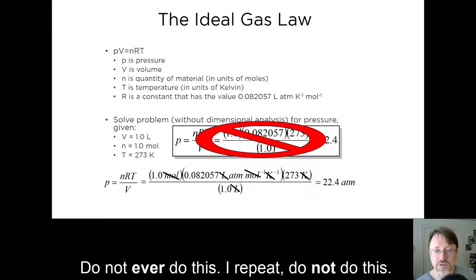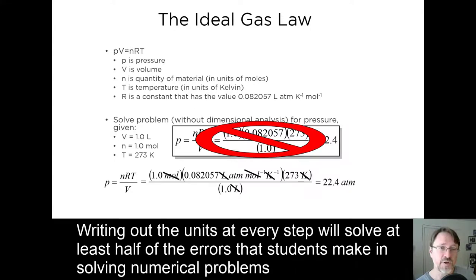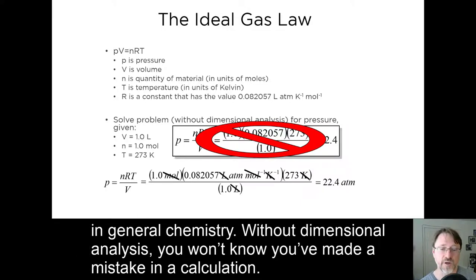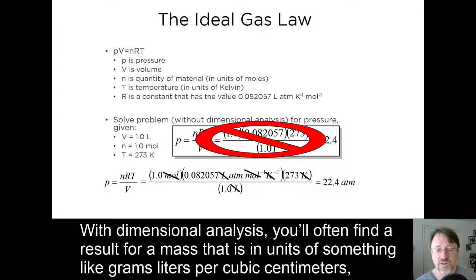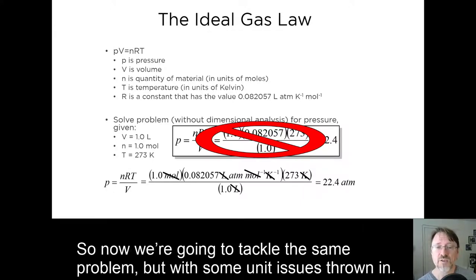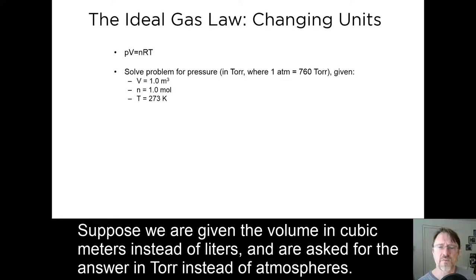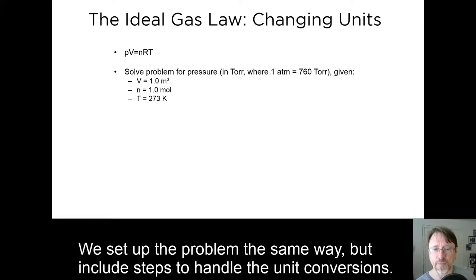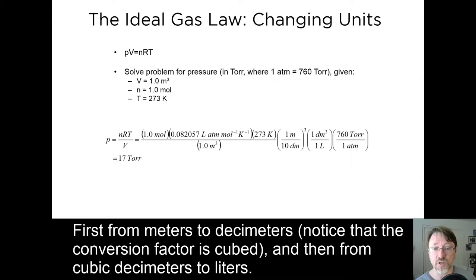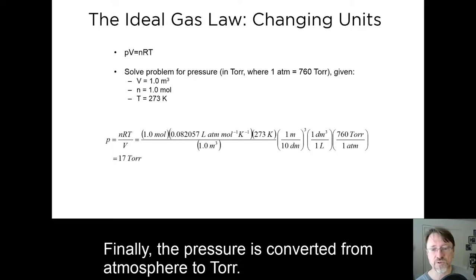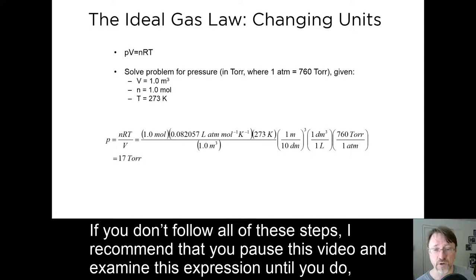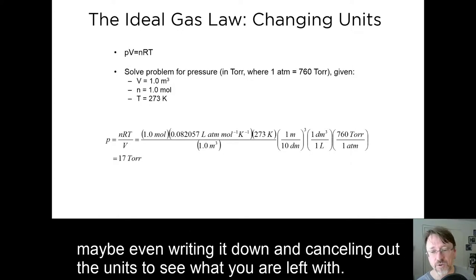It is quite tempting for these kinds of problems to try to avoid all this writing by leaving off the units. Do not ever do this. I repeat, do not do this. Writing out the units at every step will solve at least half of the errors in general chemistry. Without dimensional analysis, you won't know you've made a mistake in the calculation. With dimensional analysis, you'll often find a result for a mass that's in units of something like grams liters per cubic centimeters, which is clearly wrong. So now we're going to tackle the same problem, but with some unit issues thrown in. Suppose we are given the volume in cubic meters instead of liters, and are asked for the answer in torr instead of atmospheres. We set up the problem the same way, but include steps to handle the unit conversions. First from meters to decimeters, notice that the conversion factor is cubed, and then from cubic decimeters to liters. Finally, the pressure is converted from atmospheres to torr. If you don't follow all of these steps, I recommend that you pause this video and examine this expression until you do, maybe even writing it down and canceling out the units to see what you were left with.